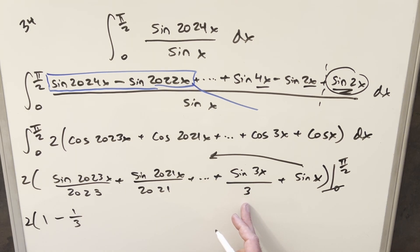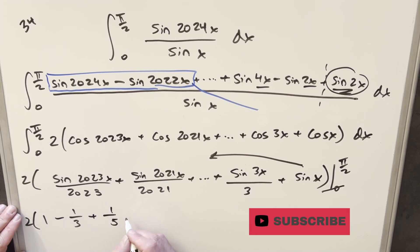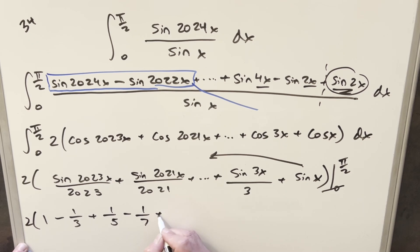Sine at 5π/2, that's going to be 1 again over a 5. So we're going to have a plus 1 over 5. Then it's just going to keep going with this pattern, alternating signs, denominator. And it's going to go, we'll do like the last few.